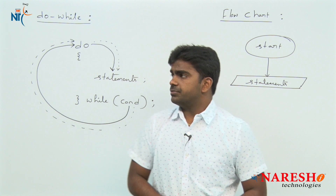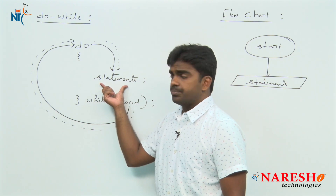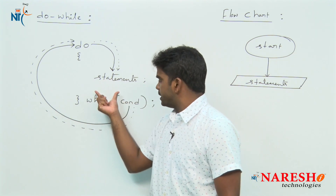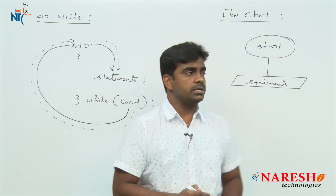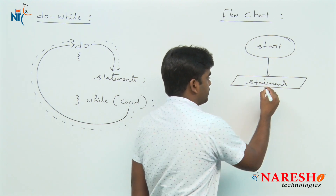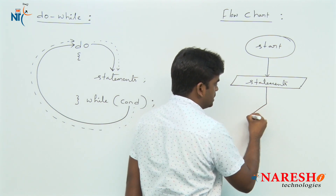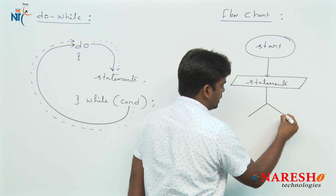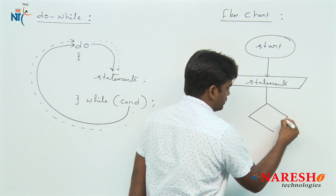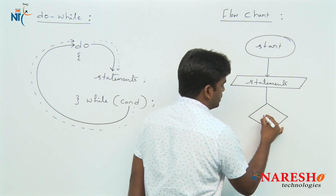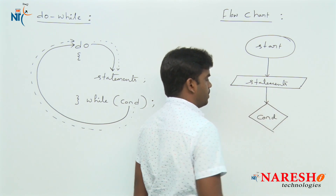Next, after executing the statements, it will come and check the condition. The condition is represented with the help of a rhombus shape, and here it is checking the condition.